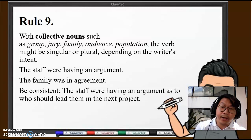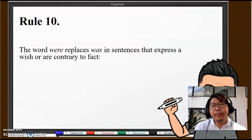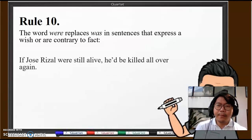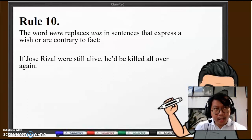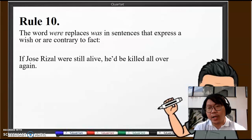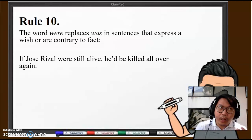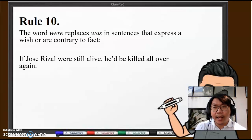Rule number 10: The word "were" replaces "was" in tense in sentences that express a wish or are contrary to fact. Contrary to fact means it's not true. For example, "If Jose Rizal were still alive, he'd be killed all over again." Jose Rizal is the subject, obviously singular, so most of the time we would use "was," right? But this is a special rule because it's not true that Rizal is alive. So with "if" statements that are contrary to fact situations, we need to use "were" instead of "was."